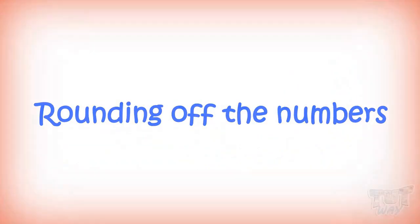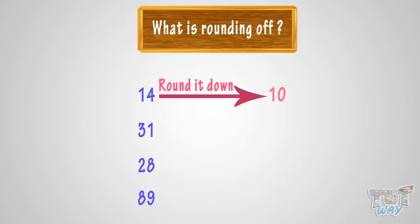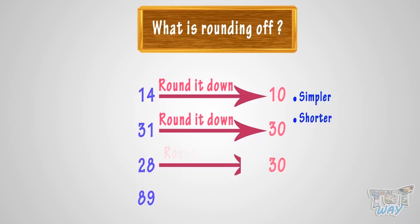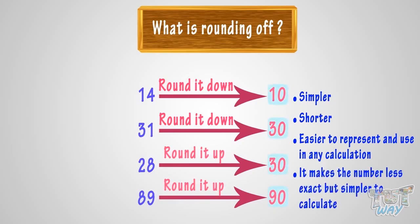First of all, what is rounding off? Rounding is to replace the number with another one that has value approximately equal to our original number, but is simpler, shorter, and easier to represent and use in any calculation. It makes it no less exact, but simpler to calculate.